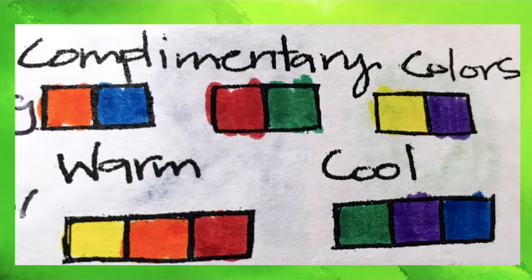Then we have warm colors like yellow, orange, and red. Think like fire. And cool colors that are more cooling like green, purple, and blue.